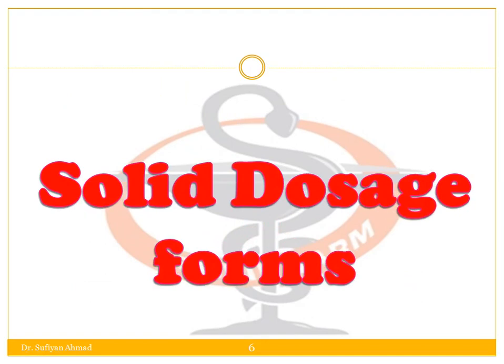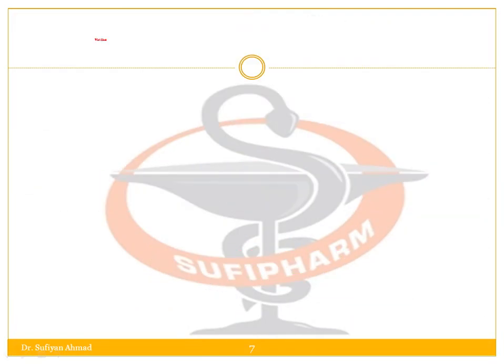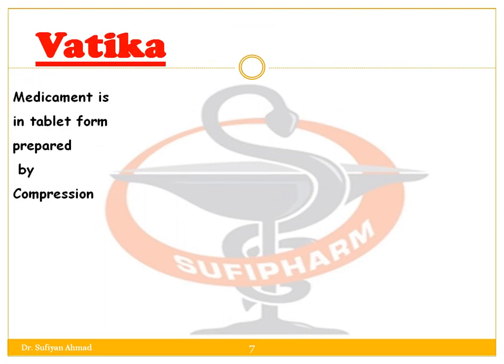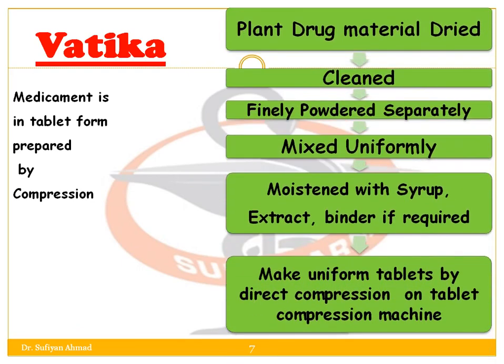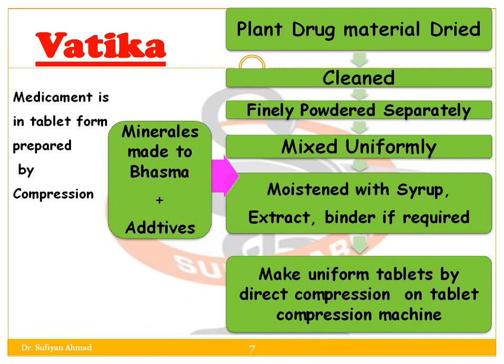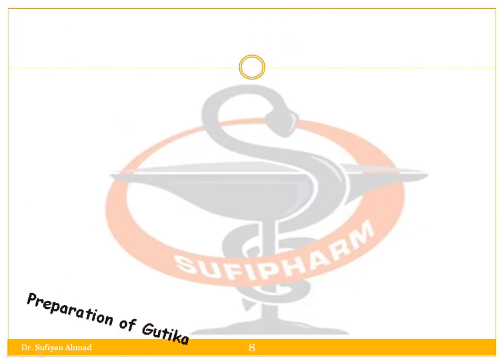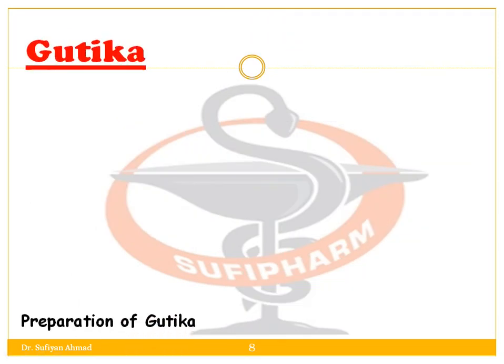Vatika is the tablet form prepared by compression. First, the plant drug material is dried, cleaned, and finally powdered separately, then mixed uniformly. Minerals, metals, bhasma, plus additives are combined and moistened with syrup, extract, or binder if required, to make uniform tablets by direct compression using a tablet compression machine.